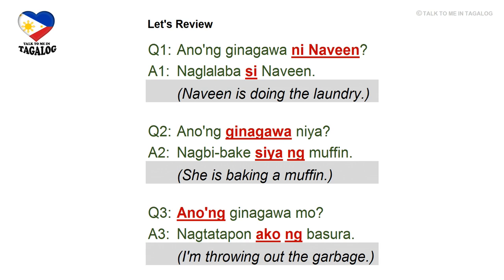Let's now take a look at the answers. Question 1: Anong ginagawa ni Navin? Answer 1: Naglalaba siya — What is Navin doing? Navin is doing the laundry. Question 2: Anong ginagawa niya? Answer 2: Nagbibake siya ng muffin — What is she doing? She is baking a muffin. Question 3: Anong ginagawa mo? Answer 3: Nagtatapon ako ng basura — What are you doing? I'm throwing out the garbage.